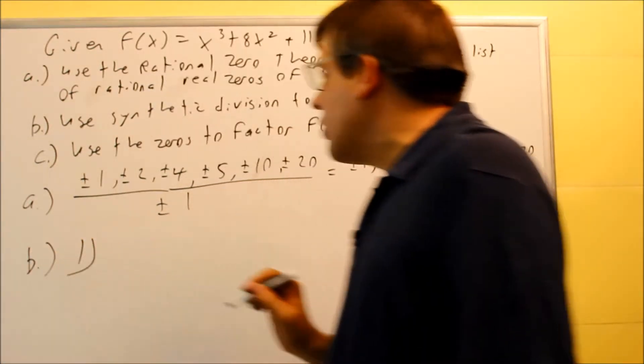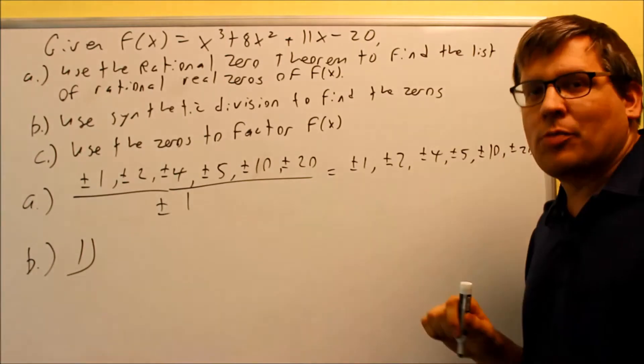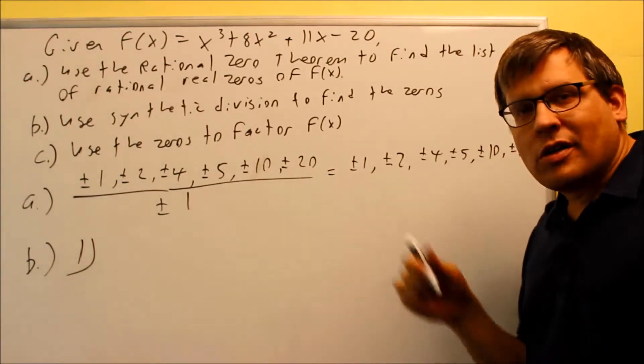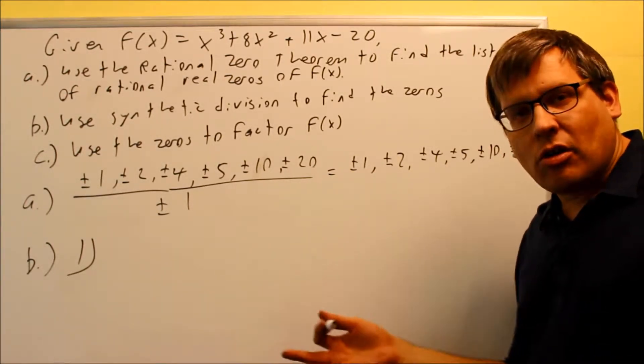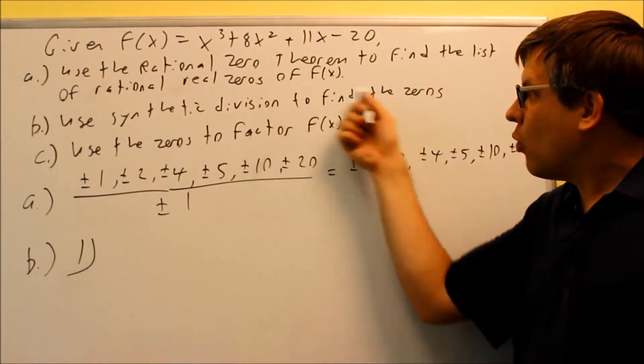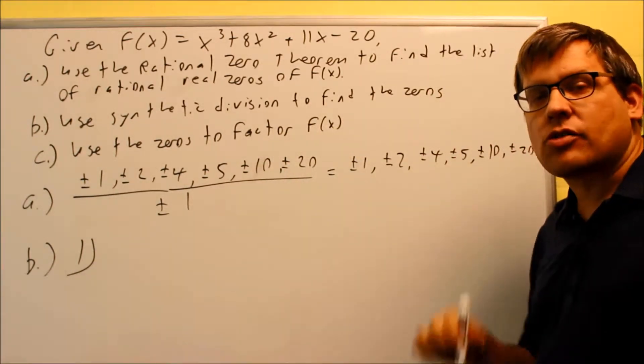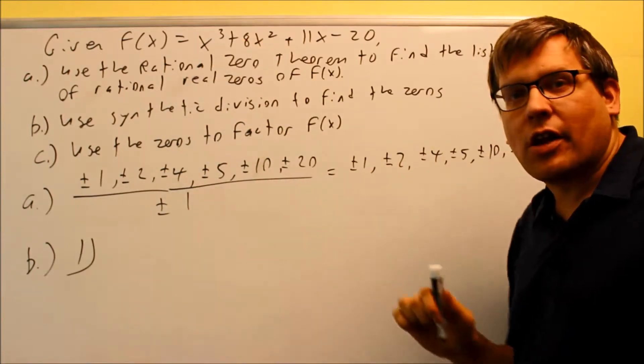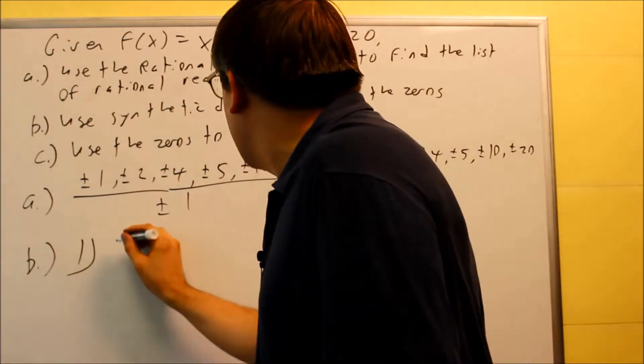So suppose if you wanted to just do trial and error and just start from the very beginning of the list. Let's just start with one and see what happens. If we get a zero that means that that's actually going to be part of my answer. That's going to be one of the zeros and also we'll take it down into a quadratic that I can factor. I'll start with one.